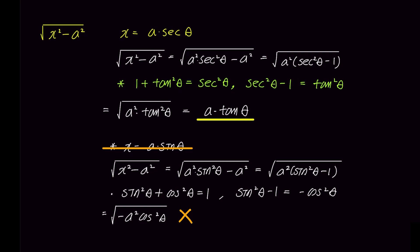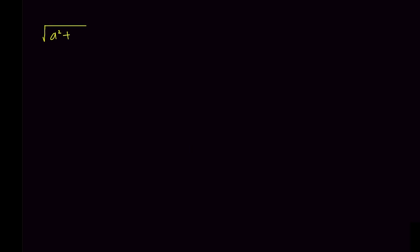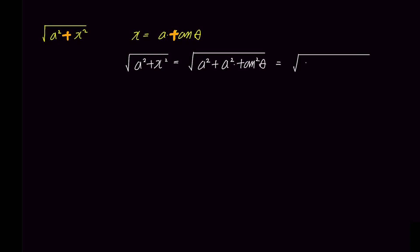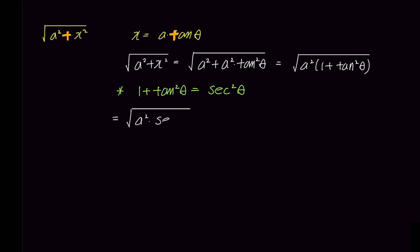Now let's explore when we substitute tangent theta. If there is a plus sign between the square of a constant and x squared, we need to substitute x with a tangent theta. Notice how the plus sign resembles the t in tangent theta — you can remember it that way if it helps. Substituting into the square root of a squared plus x squared gives a squared plus a squared tangent squared theta, which factors as a squared times 1 plus tangent squared theta. Since 1 plus tangent squared theta equals secant squared theta, the expression simplifies to a times secant theta.